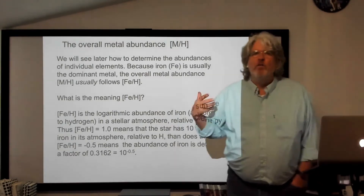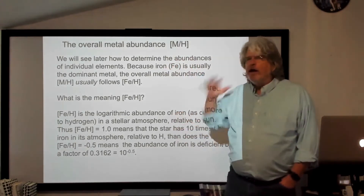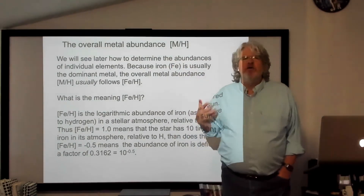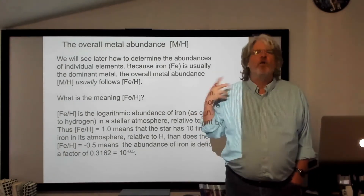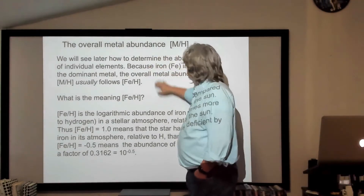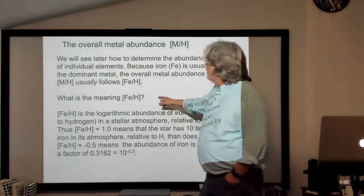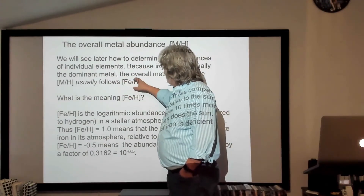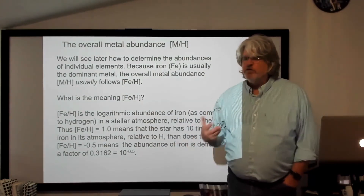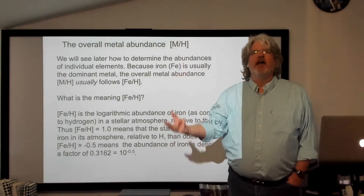I should also remind you from Wednesday: when we talk about the overall abundance of heavy elements — metals — in a star, I'm wearing my astronomy hat, and I'm talking about everything heavier than helium. So to me, nitrogen and oxygen are both metals — they're heavier than helium. The overall metal abundance of a star is sometimes written as M or as A over H. We typically use iron as a proxy to represent that overall metallicity, because the overall iron abundance tends to scale with everything else.